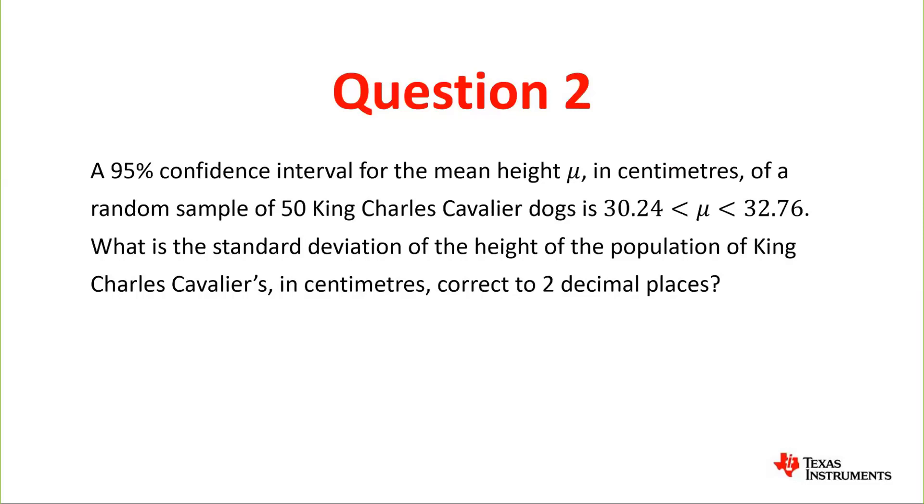So if we have a look at the normal distribution, we have it going from 30.24 to 32.76. We know this is our interval and we need to look at the length of one of these intervals from the mean to the endpoint, and we're going to use this formula here: 1.96 s over root n.